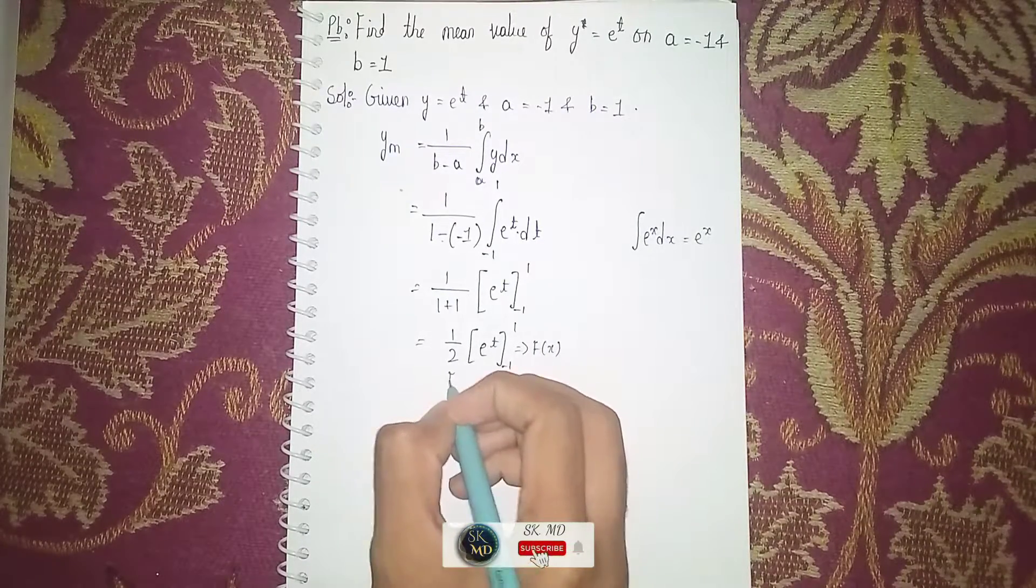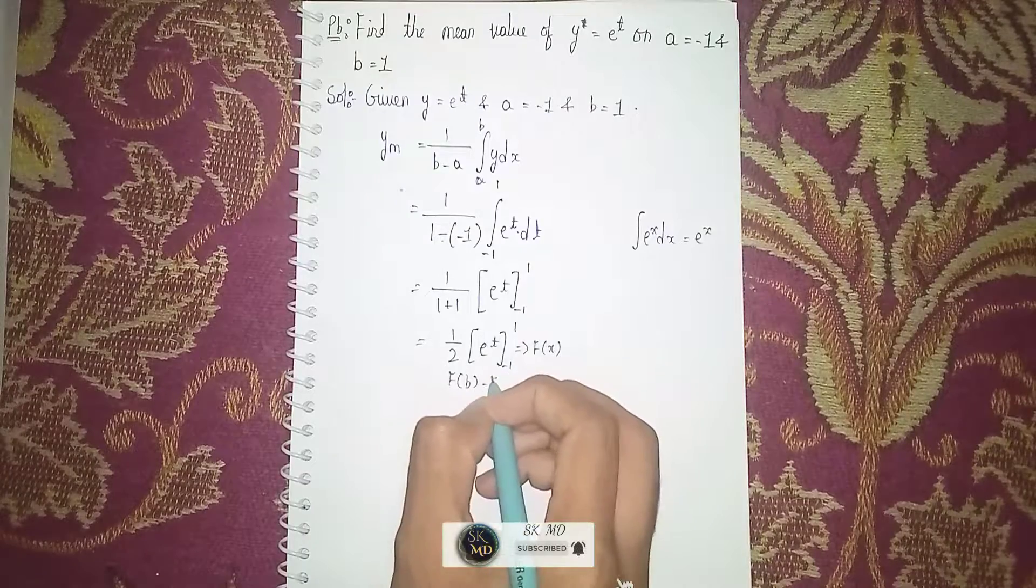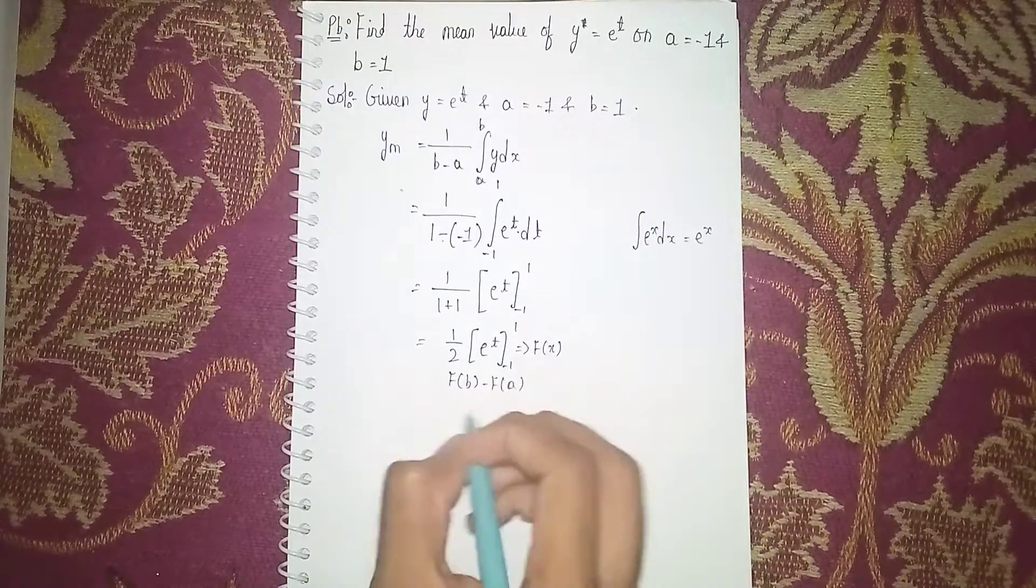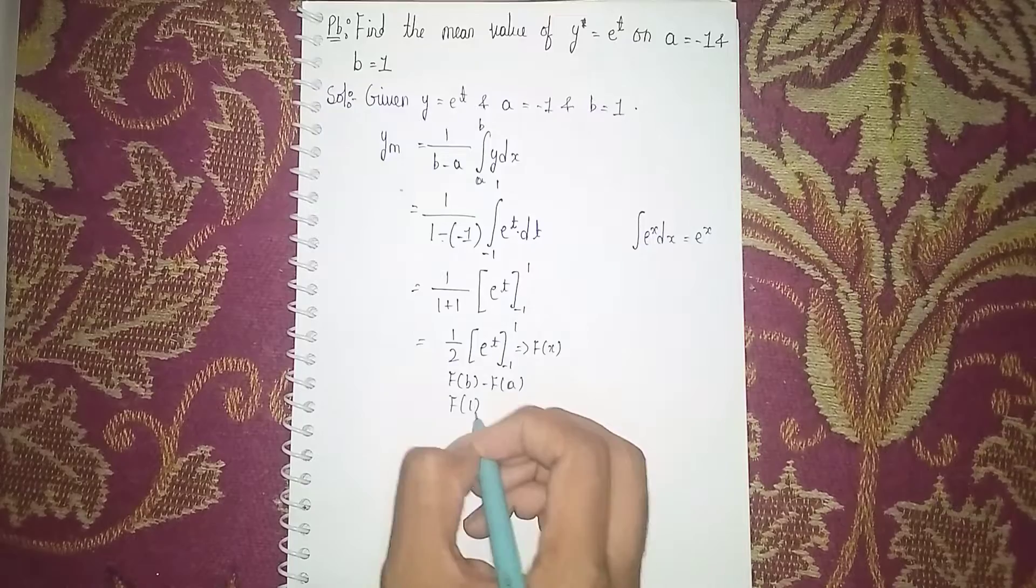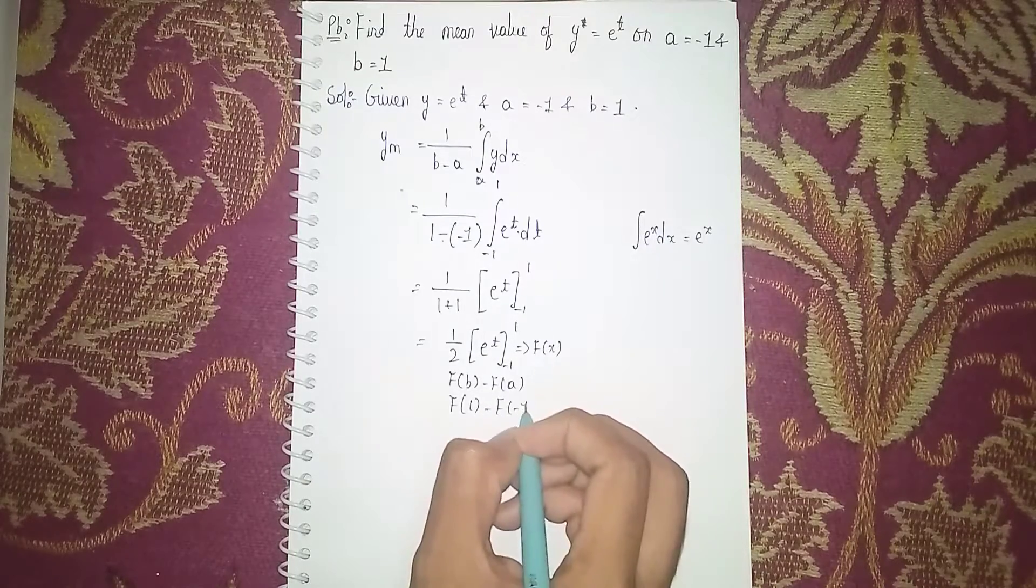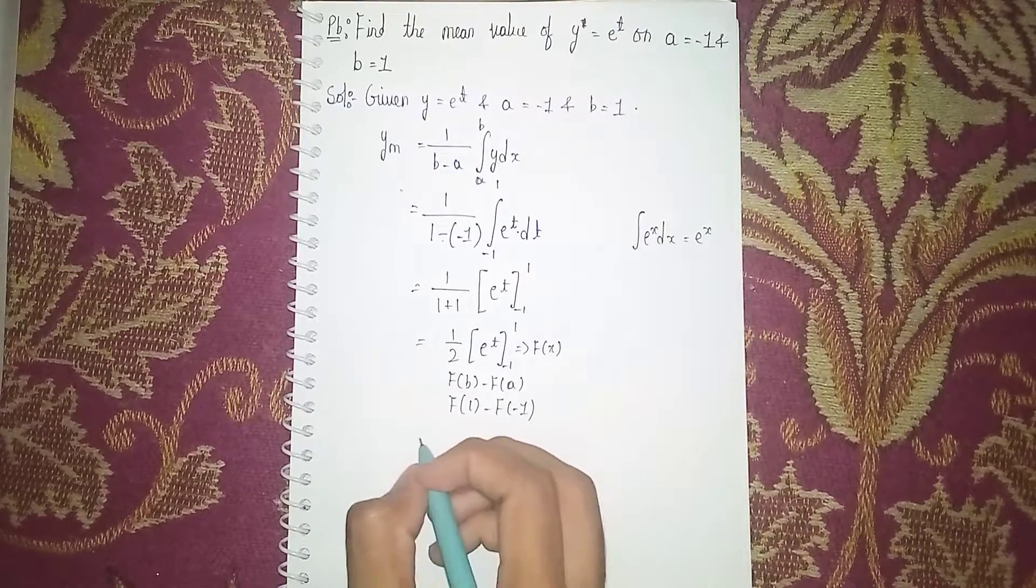Now apply the limits. Apply the limit means fb minus fa, where b is 1 and a is minus 1. So it becomes 1 by 2.